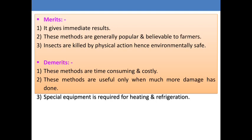The merits and demerits of physical control: merits include that it gives immediate results, these methods are generally popular and acceptable to farmers, and insects are killed by physical action, making it environmentally safe — an eco-friendly technique. As for demerits, these methods are time consuming and costly because a number of mechanical devices are required for manipulation of different physical factors, and those devices are very costly. These methods are most useful when the pest population is high. Special equipment is required for heating and refrigeration.